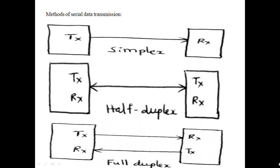The second method is half duplex. In half duplex, the data is transmitted between transmitter and receiver in both directions, but only one direction at a time. An example is a walkie-talkie or mobile phone.